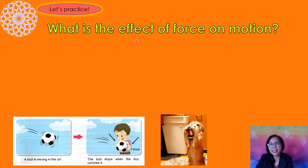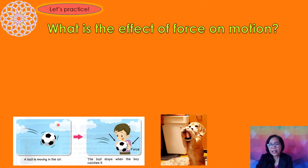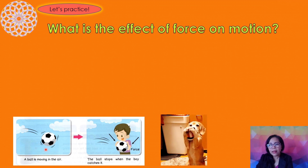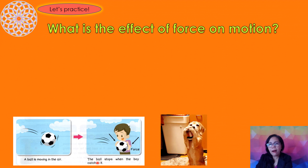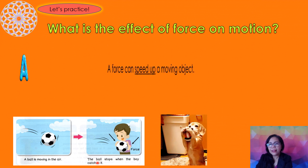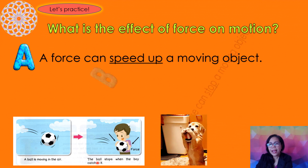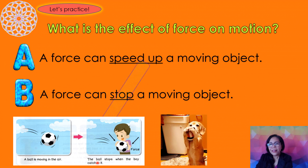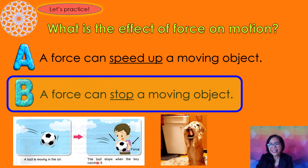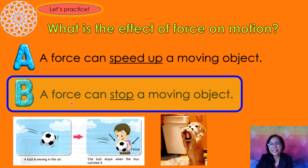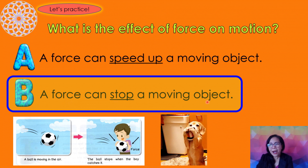What is the effect of force on motion? Look at these pictures. This is a moving ball. When you apply force on it, what will happen to the ball? Choose between letter A and letter B. The correct answer is letter B — a force can stop a moving object. Good job!